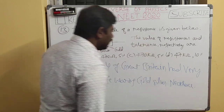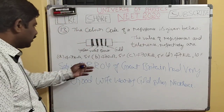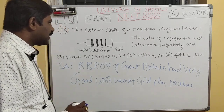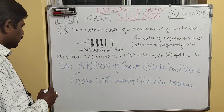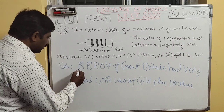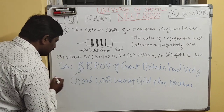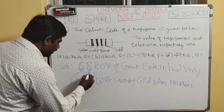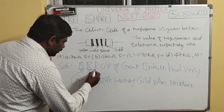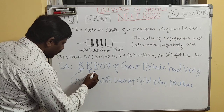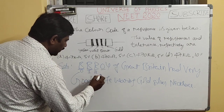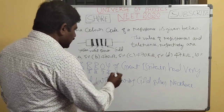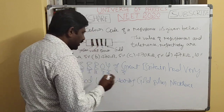Using this sentence, we can write the resistance values. The first letter B indicates black with value 0, second B indicates brown with value 1, R indicates red with value 2, orange is 3, yellow is 4, and green is 5.